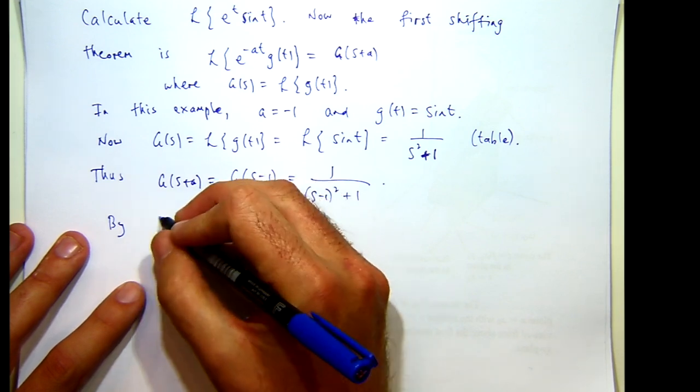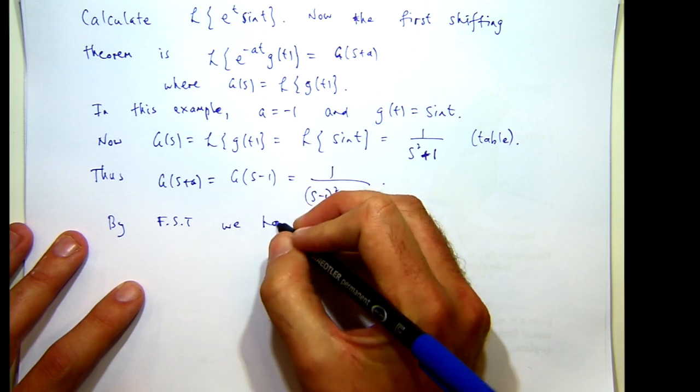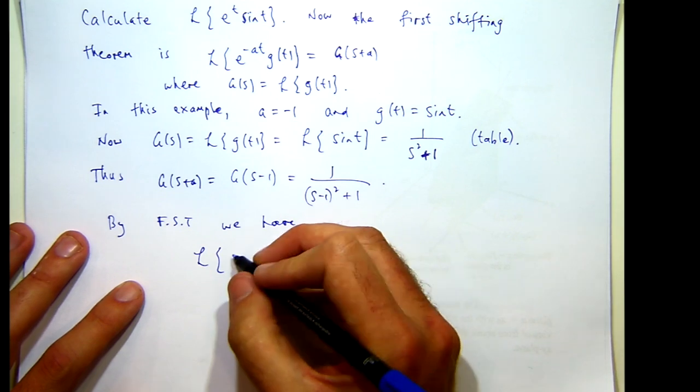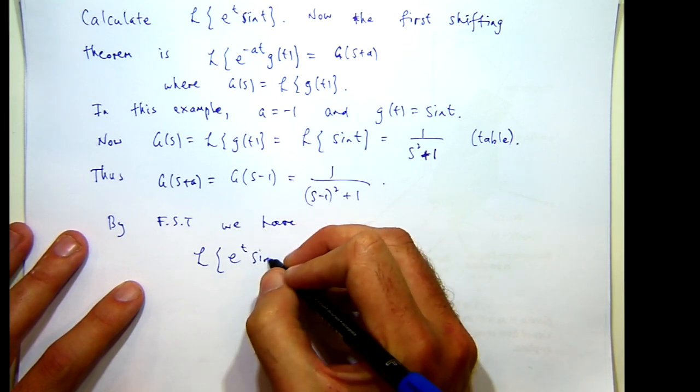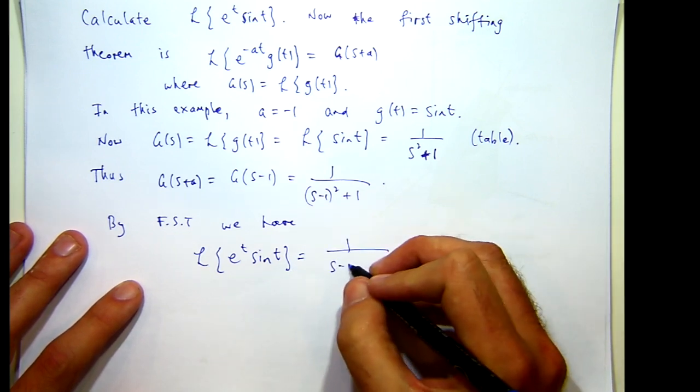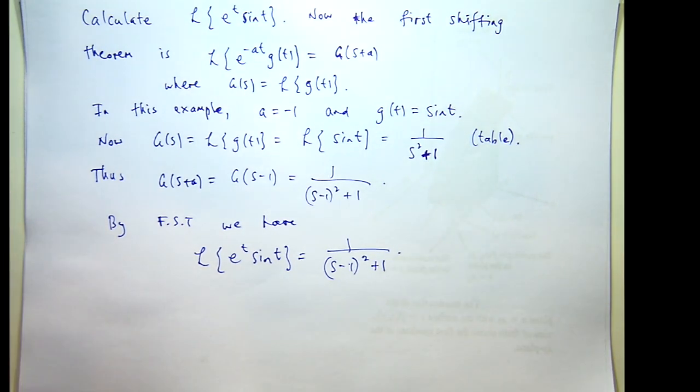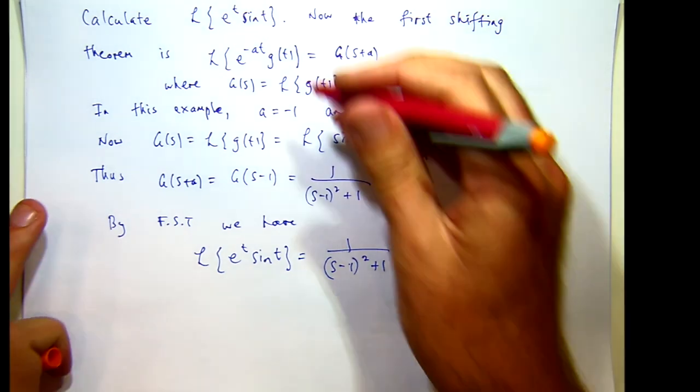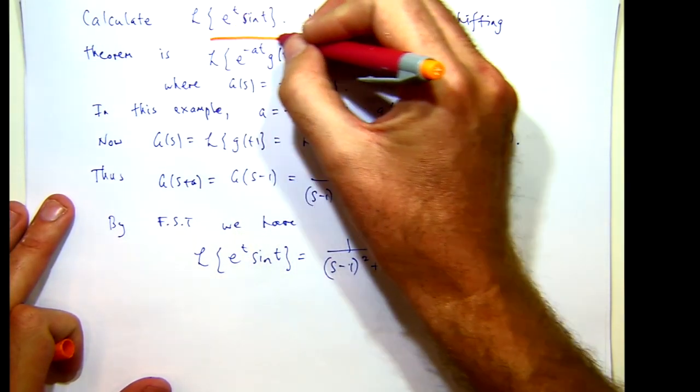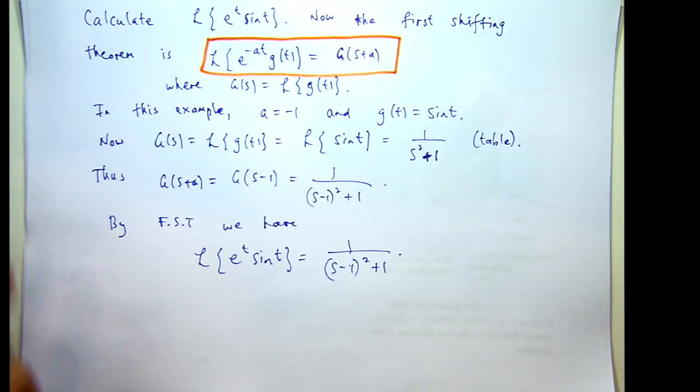So let's just write FST for the first shifting theorem. By the first shifting theorem the Laplace transform of this special product is the following. There's our first shifting theorem in a nutshell.